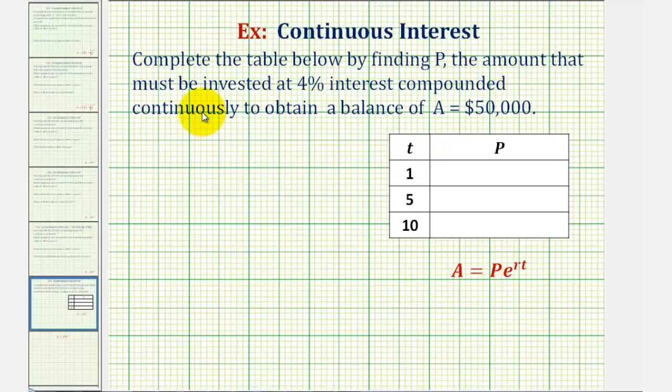So because we're told the account pays continuous interest, we're using the continuous interest formula A equals P times E raised to the power of R times T. But what's different about this problem is that we're given A, the amount after time T is equal to $50,000, and we're solving for P, the initial amount or the initial investment.